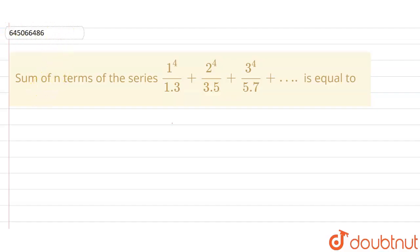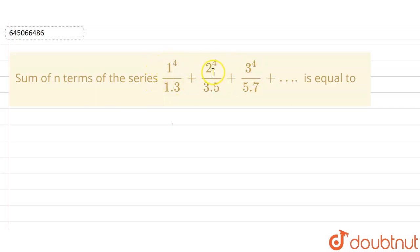Hello friends, here we have a question: the sum of n terms of the series is equal to — now we can see that the numerator is forming 1 to the power 4, 2 to the power 4, 3 to the power 4, forming an AP with a common difference of 1 to the power 4.